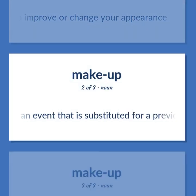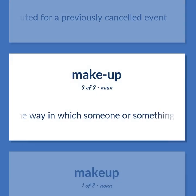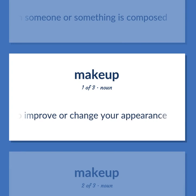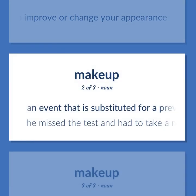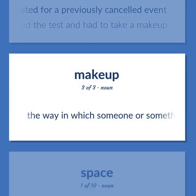An event that is substituted for a previously canceled event. The way in which someone or something is composed. Cosmetics applied to the face to improve or change your appearance. An event that is substituted for a previously canceled event. He missed the test and had to take a makeup. The way in which someone or something is composed.